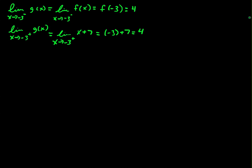These together imply that the limit as x goes to negative 3 of g of x is equal to 4.